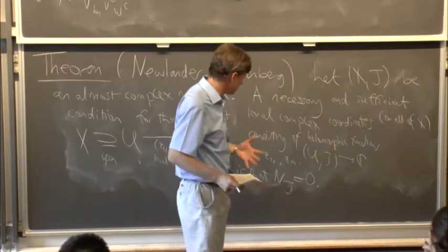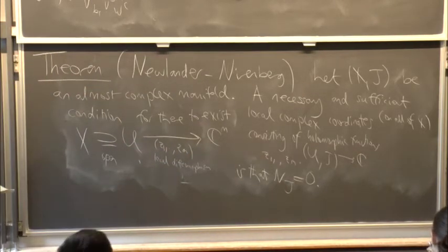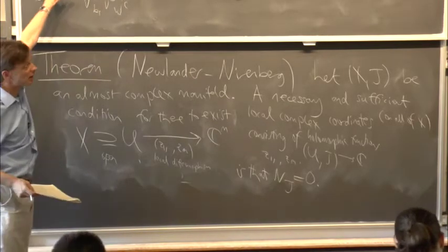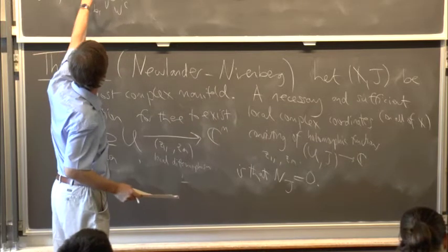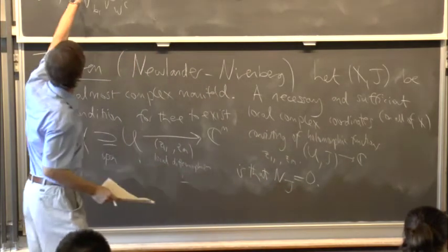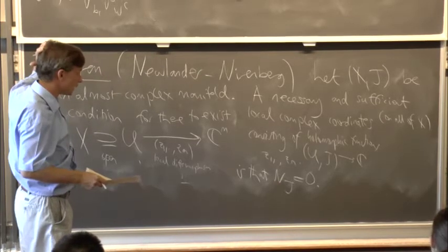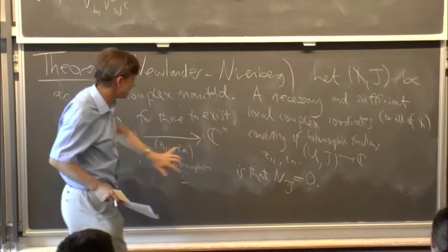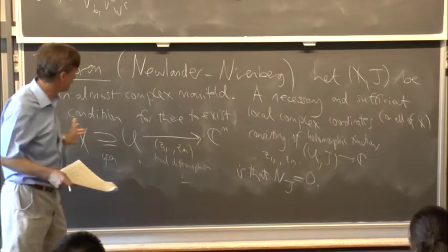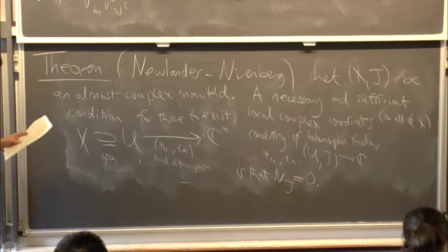This is like a curvature-equals-zero condition — rather like asking for something to be flat. One direction is easy: if you assume local holomorphic coordinates exist, you take V and W to be coordinate vector fields like ∂/∂x_j and ∂/∂y_k, play with that, and you find N_J is zero. The hard direction is: if N_J equals zero, you have to prove existence of holomorphic coordinates. That's a PDE problem — you must prove existence of local solutions to the Cauchy-Riemann equation.